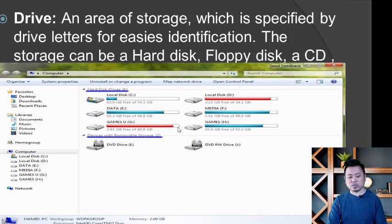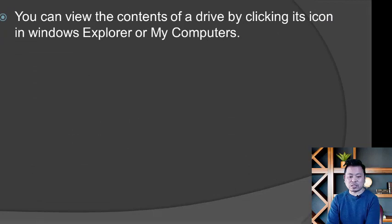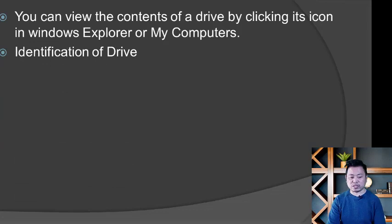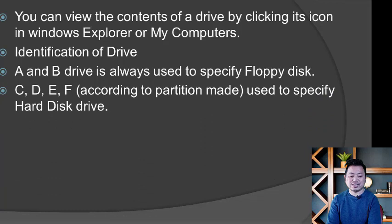The drive stores data in an array. You can view the contents of a drive by clicking its icon in Windows Explorer or My Computer. For drive identification: A and B drives are always used for floppy disks, while C, D, E, and F drives according to partition are used for the hard disk.